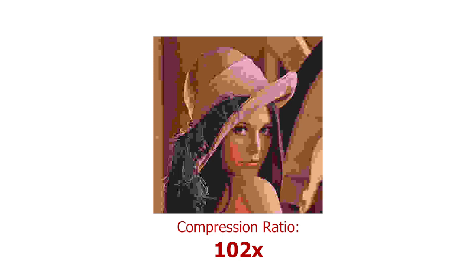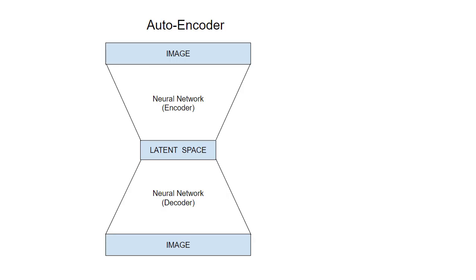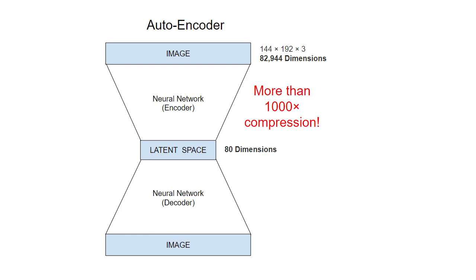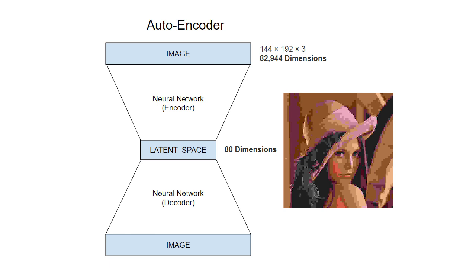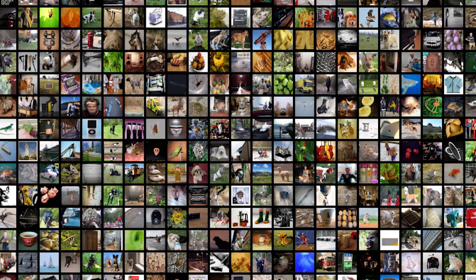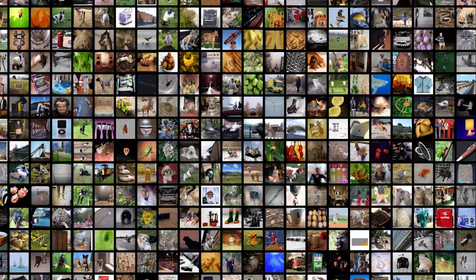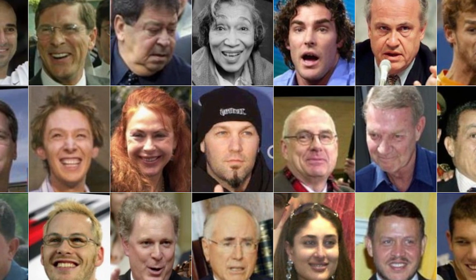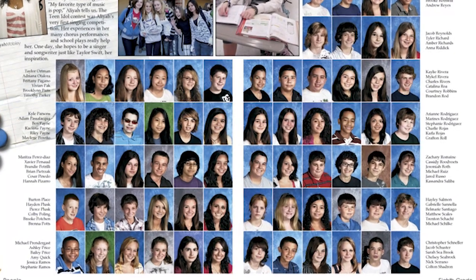So let's compare that to the autoencoder we're about to use. We're starting with an image that's 144 pixels wide by 192 pixels tall with three color channels — that's about 83,000 dimensions — and we're going to squeeze that down through just 80. That's more than a thousand times compression. But how can we possibly expect a decent looking face with this much reduction? We just saw what happened to JPEG with 100x compression. The reason is that JPEG has to compress all possible images, whereas we're only interested in faces. The space of all possible faces is way smaller than the space of all images, by orders of magnitude, especially considering they were all posed similarly.